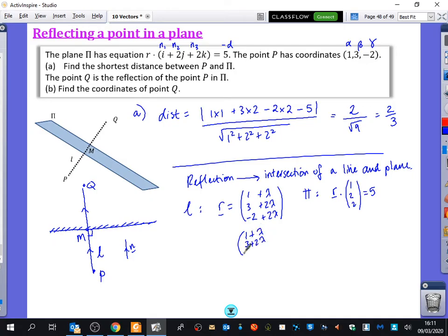So you end up with 1 plus lambda, 3 plus 2 lambda and minus 2 plus 2 lambda dotted with 1, 2, 2 to give you 5. So that's 1 plus lambda plus 6 plus 4 lambda minus 4 plus 4 lambda is equal to 5. So that's 9 lambda equals 2. Have I done that right? Yeah? 1 plus 6 minus 4.